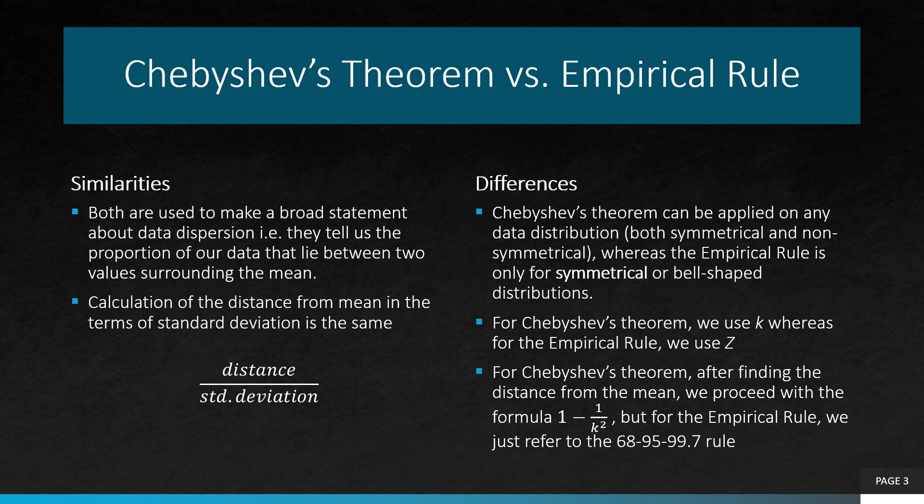Second, the calculation of distance from the mean in terms of standard deviation is the same for both Chebyshev's theorem and the empirical rule — that is, distance divided by the standard deviation. But while we use k for Chebyshev's theorem, we use z for the empirical rule. Another difference is that for Chebyshev's theorem, after finding the distance from the mean, we proceed with the formula 1 − 1/k², but for the empirical rule, no further calculations are needed. Instead, we just refer to the 68, 95, and 99.7 rule.